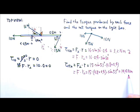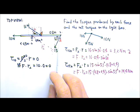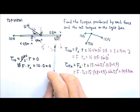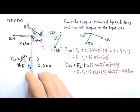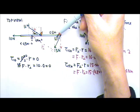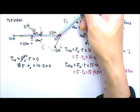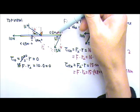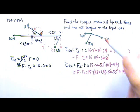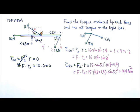What about direction? If this is the only force acting on the bar with the fulcrum here, this force is going to make the right side of the bar go down. Therefore, it's a clockwise torque.